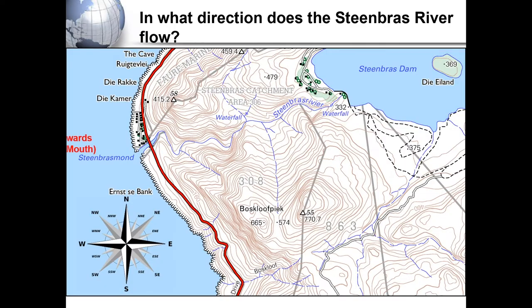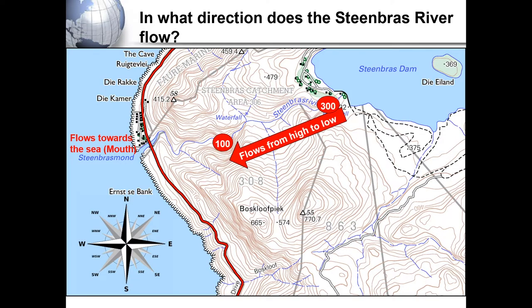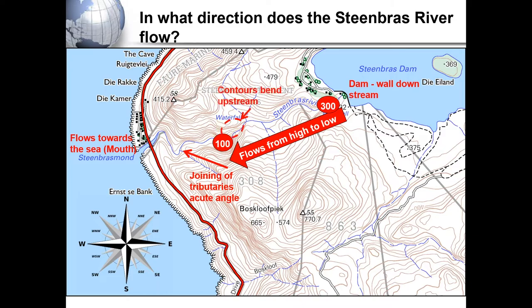If you are asked in what direction the Steenbras River flows, you can look at the following. You can see that we have the Steenbras mouth, referring to the mouth of the Steenbras River. It flows from a height of 300 meters down to 100 meters. The dam wall is downstream. We have tributaries joining at an acute angle, and our contours bend upstream.